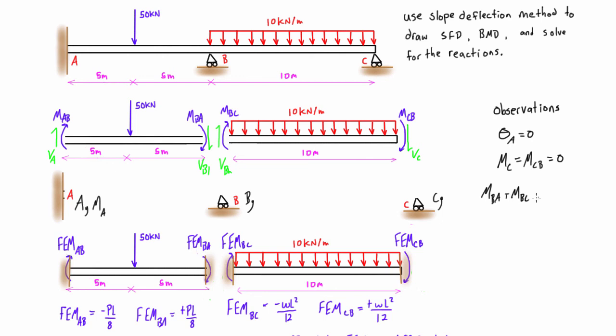Because if these don't, if these aren't equal and opposite, then this point is not going to be in static equilibrium, this thing is going to be like rotating, and that's clearly not what's happening in this case. So we know that those have to sum up to zero.